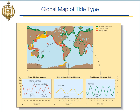The Gulf coast of the United States is a diurnal tide — you only get one high and one low per day there. The west coast of the U.S. is a mixed tide region where you'll get two highs and two lows, but the heights of those highs vary significantly.